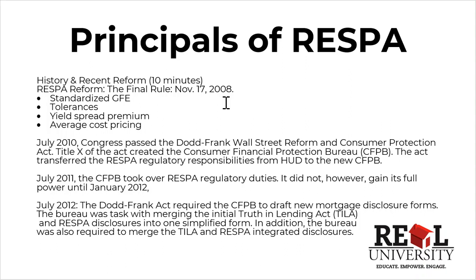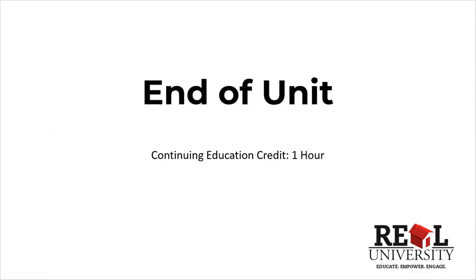So now in 2012, the CFPB drafted new mortgage disclosures. That is when they merged the GFE with the Truth in Lending — the initial TILA — to get the new loan estimate form. Basically, that's where we created TRID, integrating the Truth in Lending Act and the RESPA Act. And that's been the evolution of this whole process.